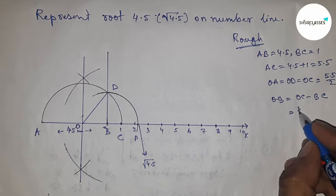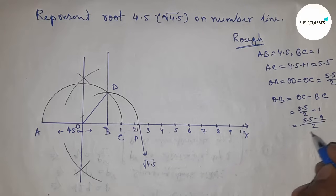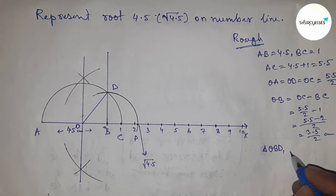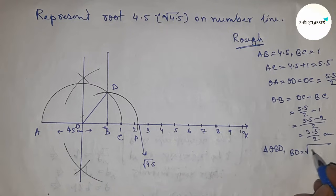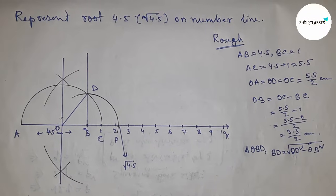Now OB equals OC minus BC. So putting the value of OC and BC and calculating this, so this is 3.5 by 2. Next, in right angle triangle ODB, we can write that by Pythagorean theorem, hypotenuse squared minus base squared. So putting the value of hypotenuse...